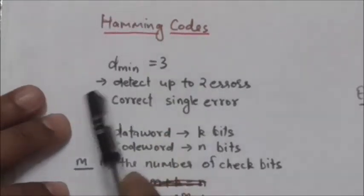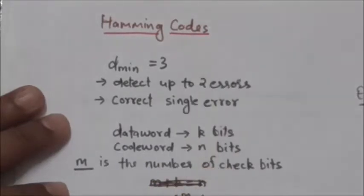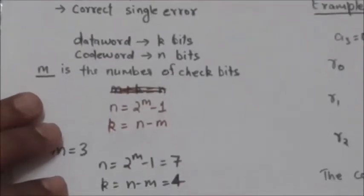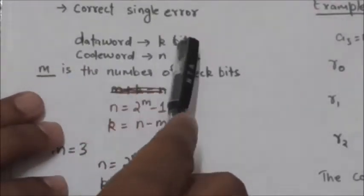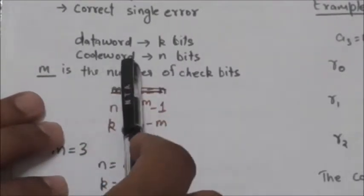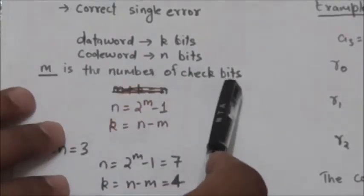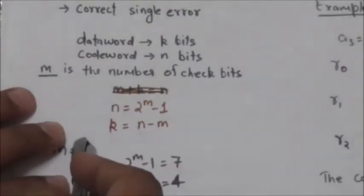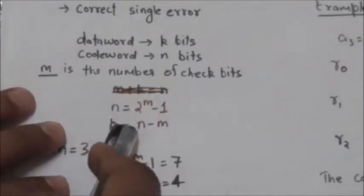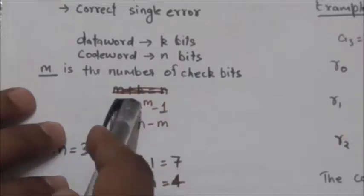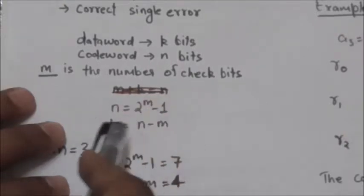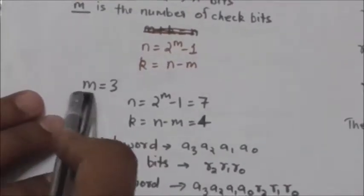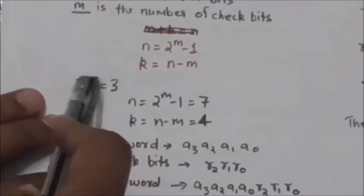With minimum Hamming distance 3, they can detect up to two errors and correct a single error. Now suppose the data word has k bits, the code word has n bits, and m is the number of check bits. The values of n and k are calculated from m using these two equations: n is equal to 2 raised to the power m minus 1, and k is equal to n minus m.